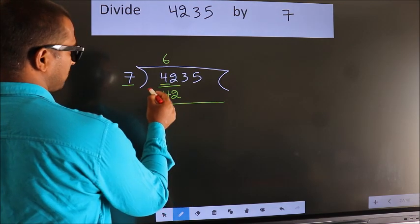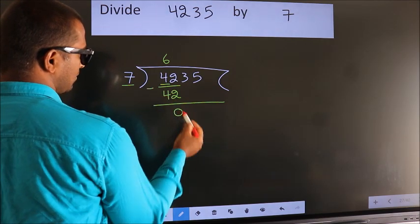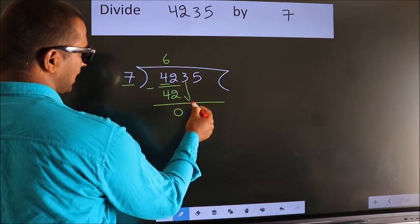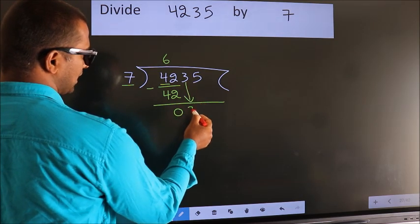Now we should subtract. We get 0. After this, bring down the next number. So 3 down.